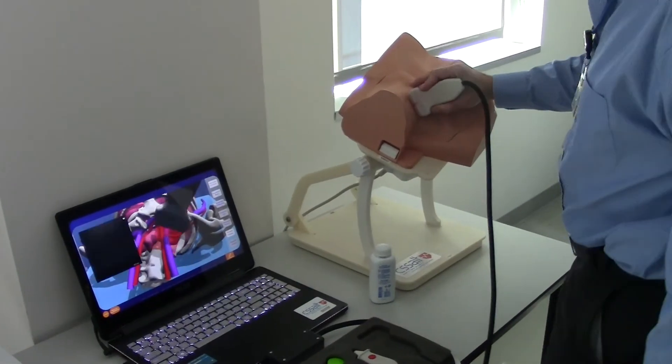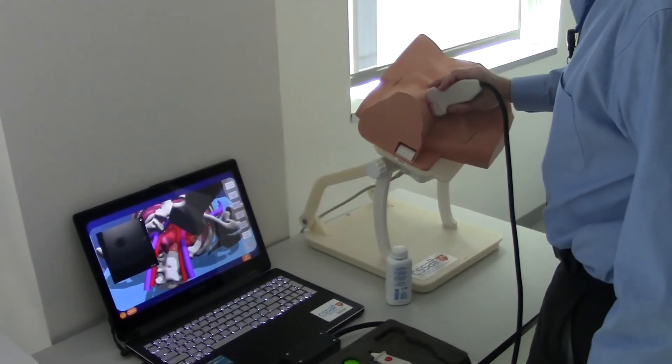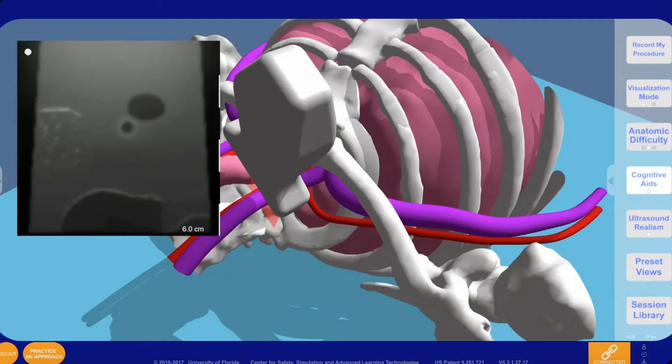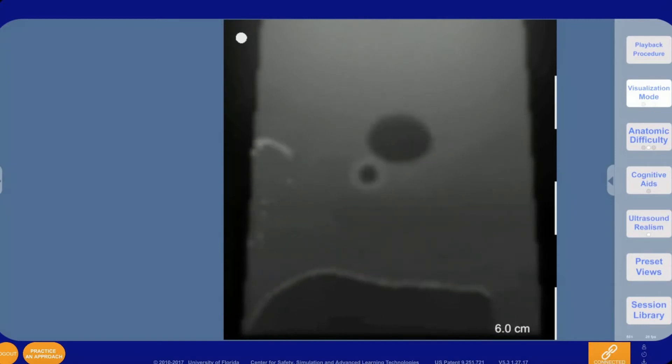The simulated ultrasound images are generated in real-time according to the position, orientation, and applied pressure of the physical probe that is tracked in space. Markers show depth in centimeter increments.